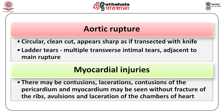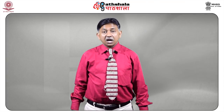In aortic rupture, the tear is circular, clean-cut, and appears sharp as if transected with a knife. Ladder tears — multiple transverse intimal tears — are adjacent to the main rupture. In the heart, there occur contusions, lacerations, contusion of the pericardium and myocardium without fracture of the ribs, and avulsion and laceration of the chambers of the heart. Tracheobronchial disruption and bruising of the lungs, especially on the posterior aspect, occur due to blunt impact. Two or more deceleration injuries are almost invariably fatal.